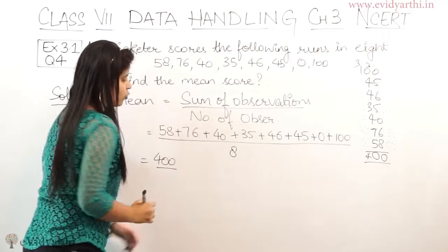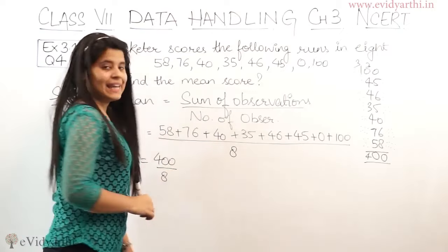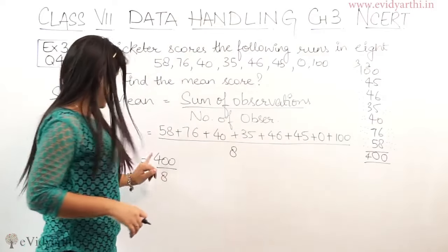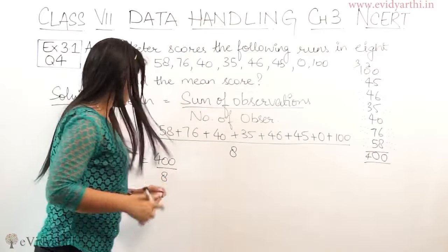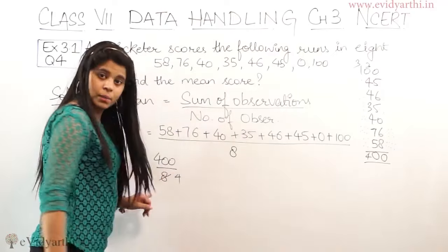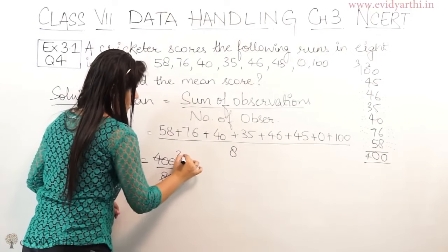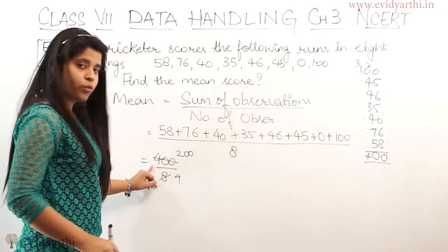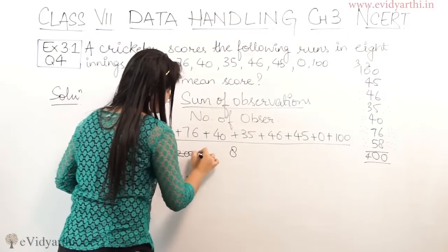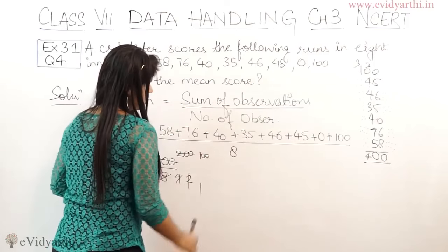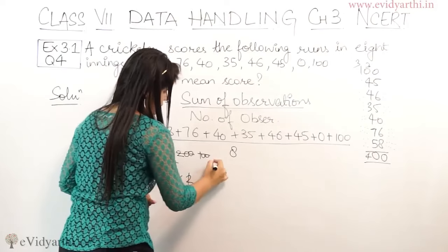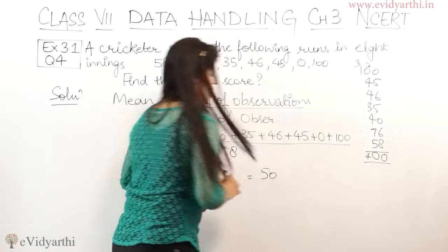So the sum is 400 divided by 8. If you want, you can divide it. 400 divided by 8: 2 fours are 8, this will be 2 zeros, and 2 twos are 4, leaving us with 50. So the answer is 50 upon 1, which means 50.